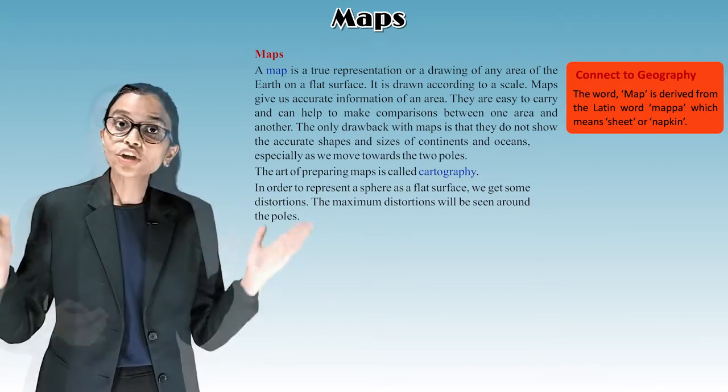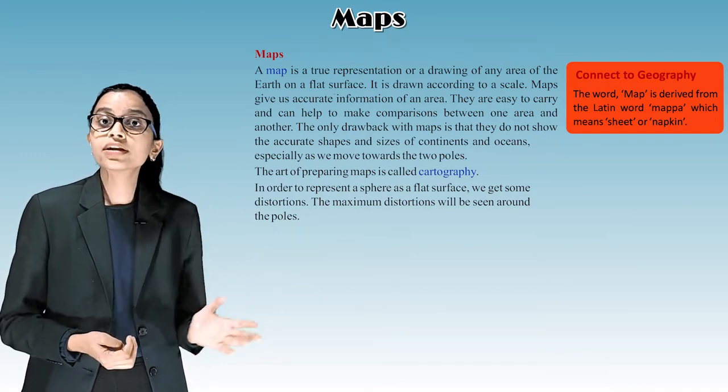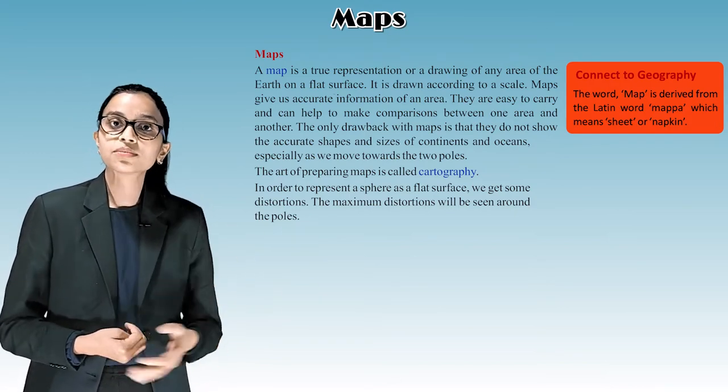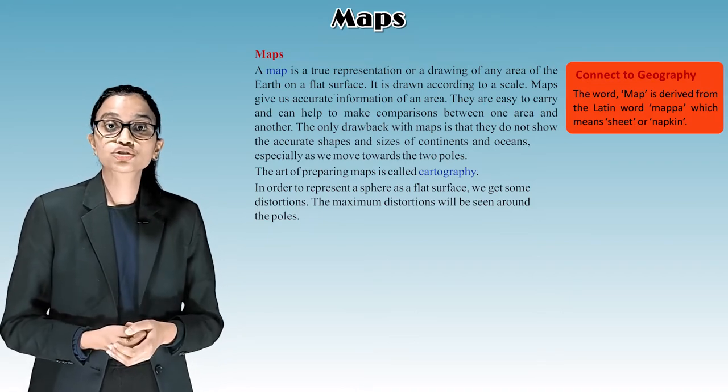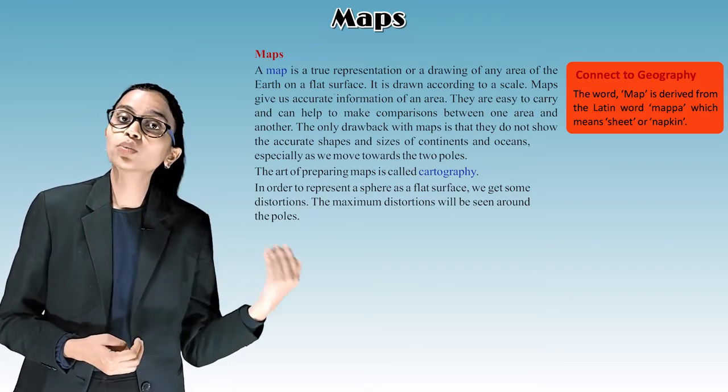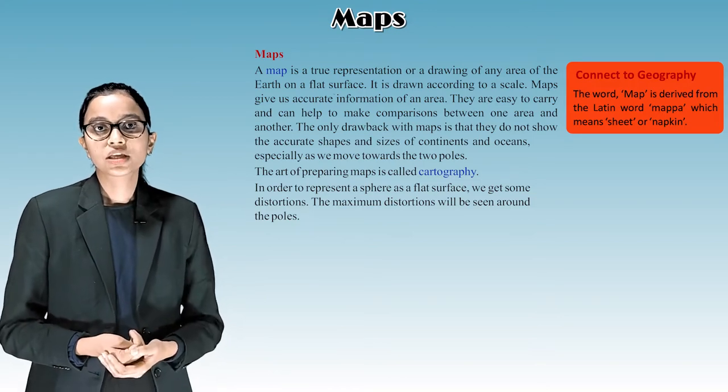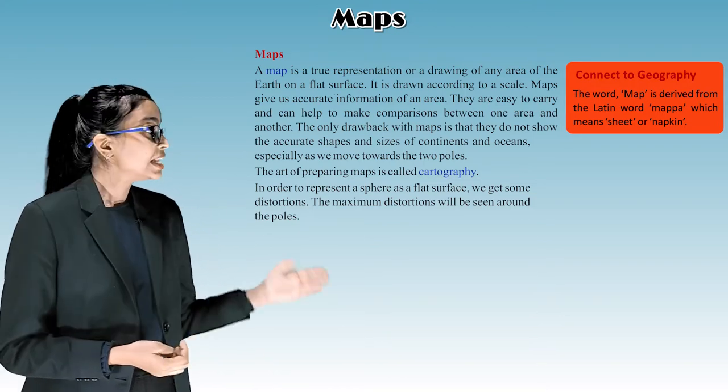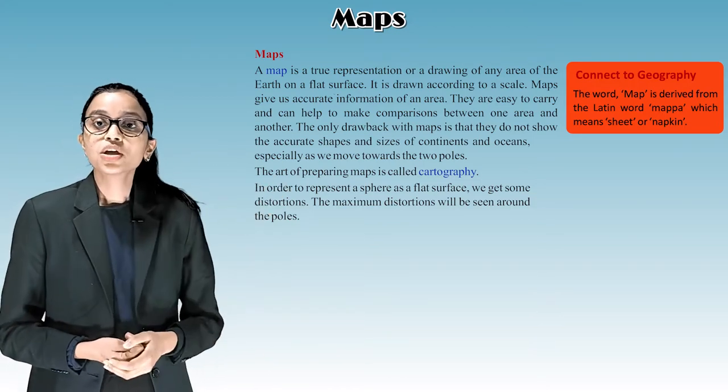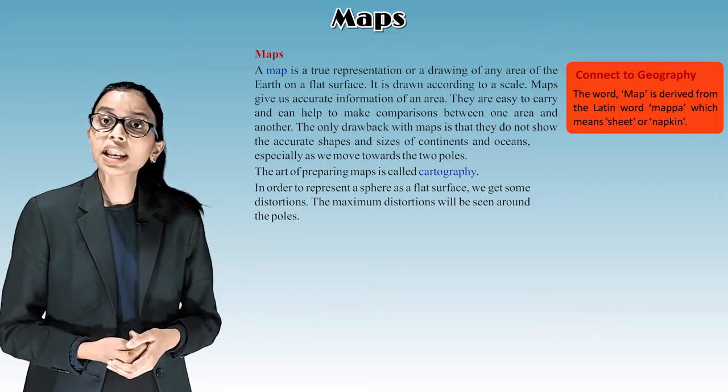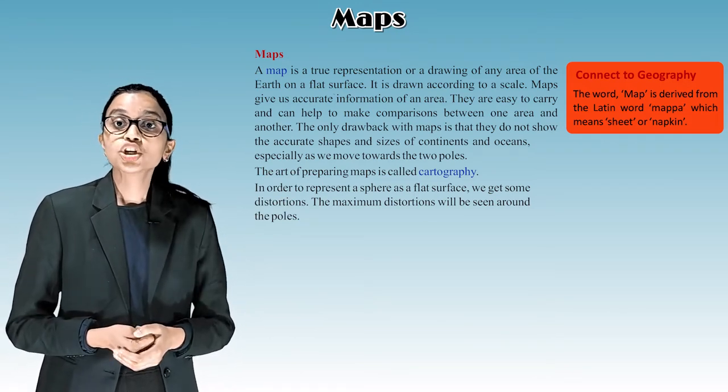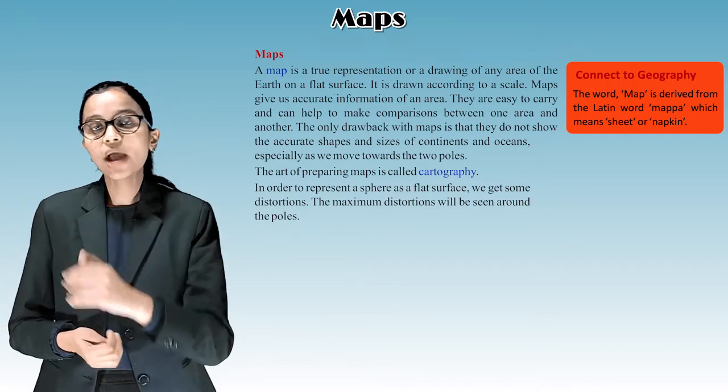The only drawback with maps is that they do not show the accurate shape and size of continents and oceans. In order to represent a sphere as a flat surface, we get some distortions. The maximum distortions will be seen around the poles. Let's connect to geography. The word map is derived from the Latin word mappa, which means sheet or napkin.